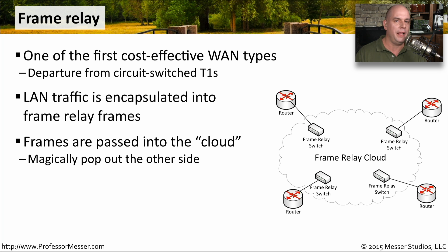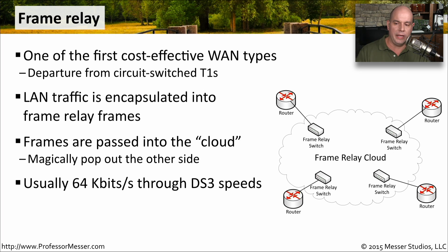It was the responsibility of the provider in the middle to make sure the data was traversing from one end to the other. We didn't exactly understand what happened inside the cloud, but we knew we were using bandwidth in the best possible way — if we weren't using the connection, somebody else was, which kept the cost down. Certainly less than paying for a T1 or T3 connection that was always up whether we were sending data or not. Speeds generally ranged from 64 kilobits per second through T3/DS3 type speeds.